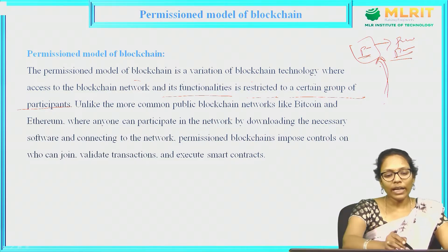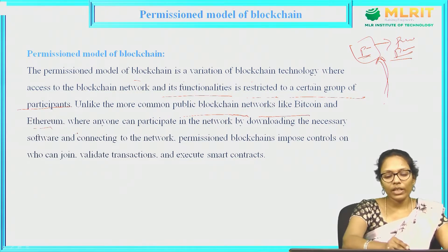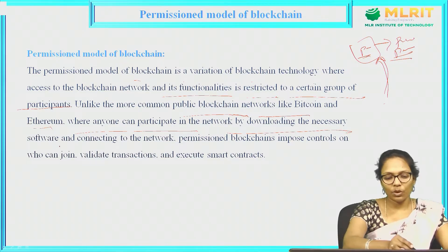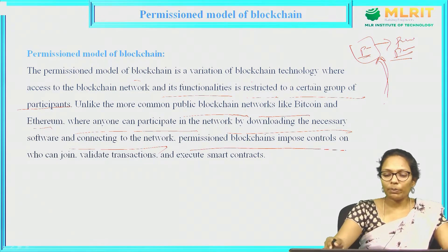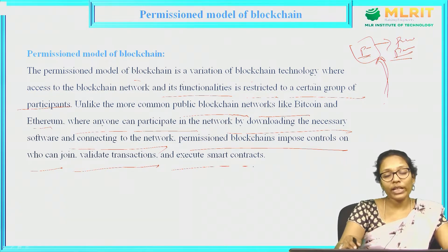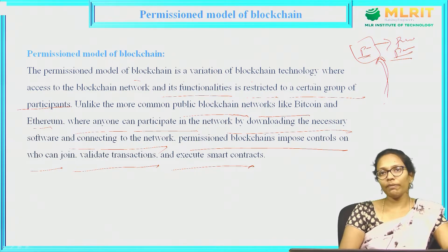Unlike the common public blockchain networks like Bitcoin and Ethereum, where anyone can participate by downloading the necessary software and connecting to the network, permissioned blockchains impose controls on who can join, who can validate the transaction, and who can execute smart contracts. In a public blockchain, there is no restriction — anyone can read, anyone can write, and anyone can validate the transaction.